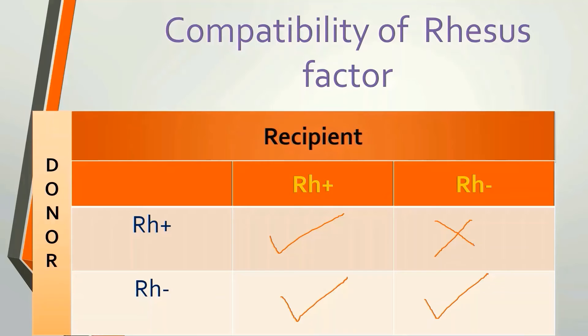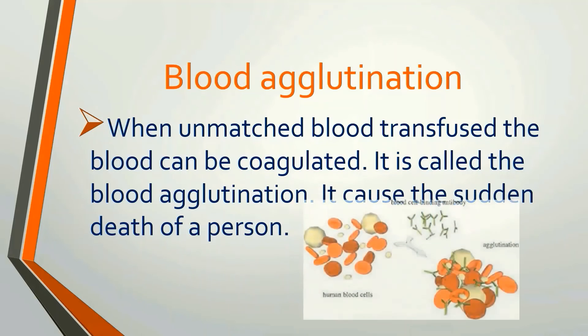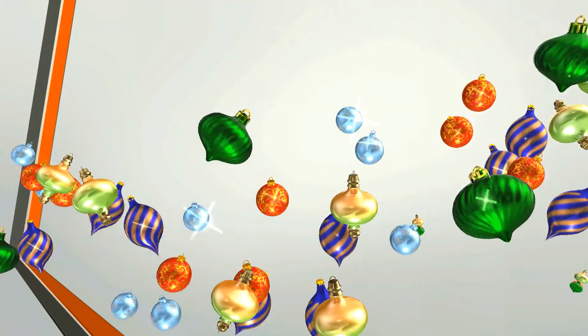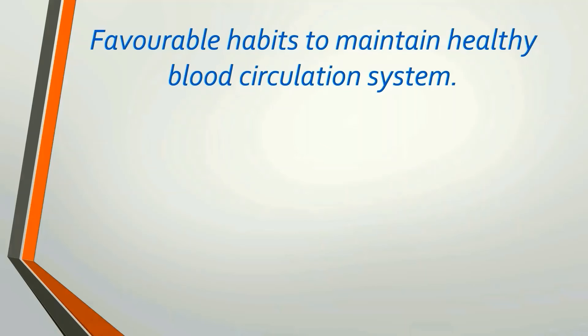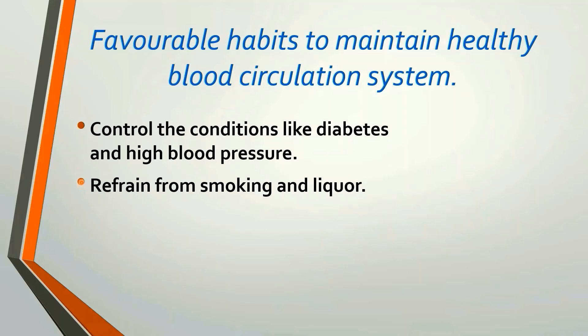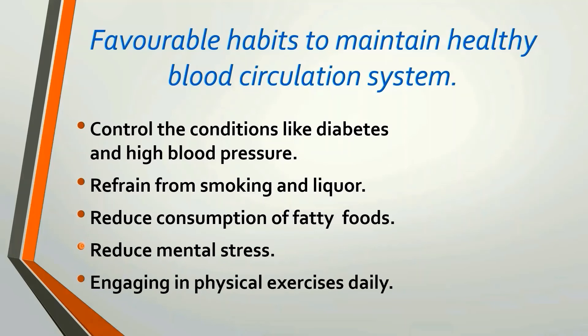To maintain a healthy blood circulatory system: control conditions like diabetes and high blood pressure, refrain from smoking and alcohol, reduce consumption of fatty foods, reduce mental stress, and engage in physical exercises.